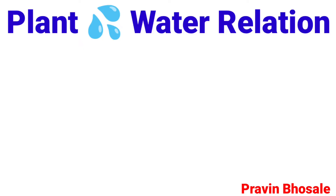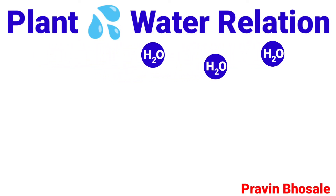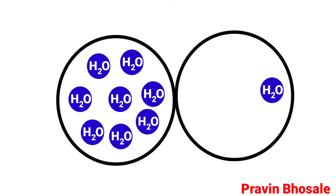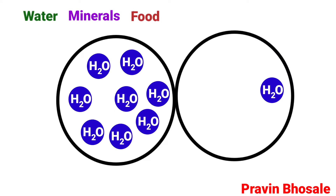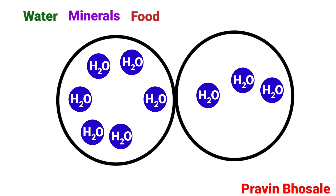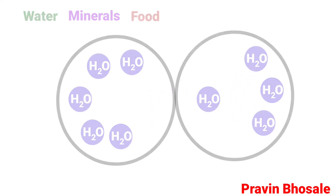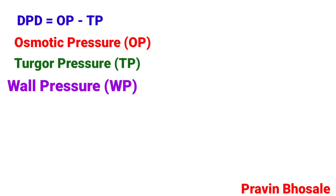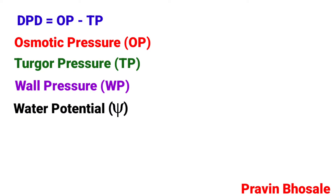Plant water relations — the topic is transport of water. Roots absorb water from the soil. In this video, we will see how water, minerals, and food are transported from one cell to another cell. We'll study about DPD, osmotic pressure, turgor pressure, wall pressure, and water potential. Let's start.